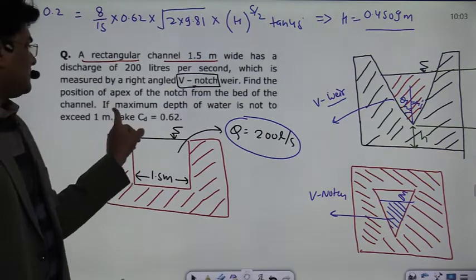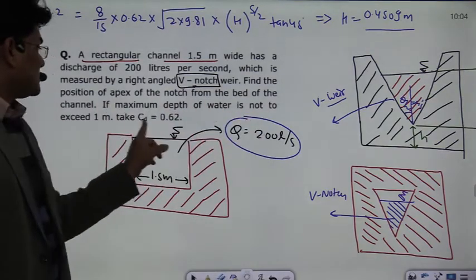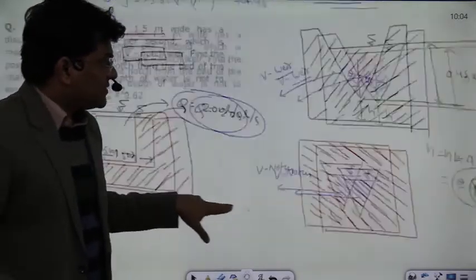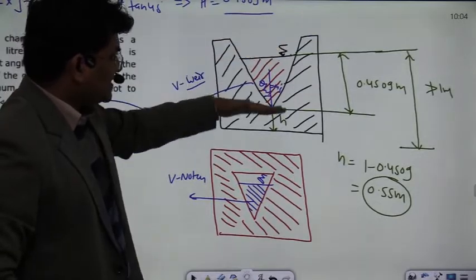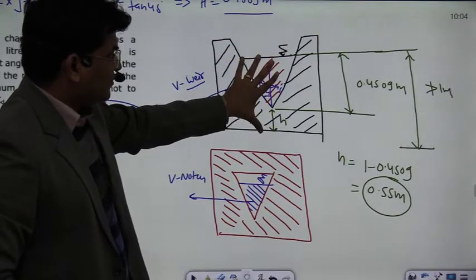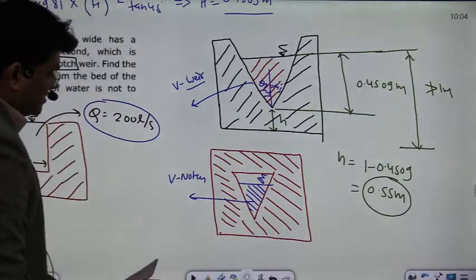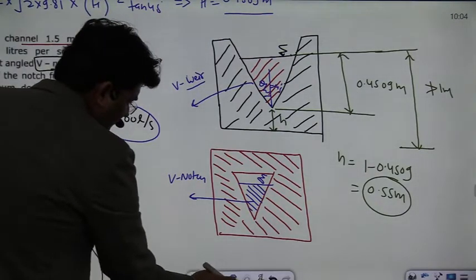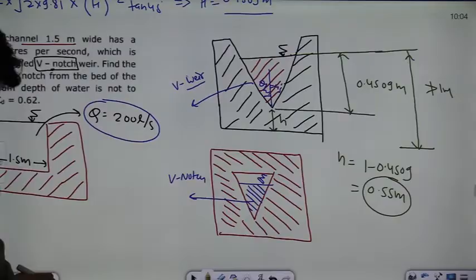If the maximum depth of water is not to exceed 1 meter, so the maximum depth of water is here. The channel bed is here, which is the depth of flow. So the depth of flow is not greater than 1 meter. The answer is 0.55 meter. Thank you so much for watching.